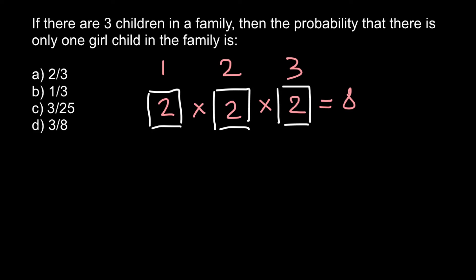Let's now find how many variants we have to have one girl in a family. The first child can be say a boy, second child can be a boy, and the third child can be a girl. This is one combination of having one girl in a family of three children.